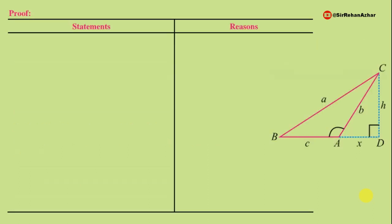Now we write the proof with statement and reason. Looking at the figure on screen, we have right angle triangle CDA. In triangle CDA, the angle at D is 90 degrees — this is given, since CD was drawn perpendicular to BA produced.